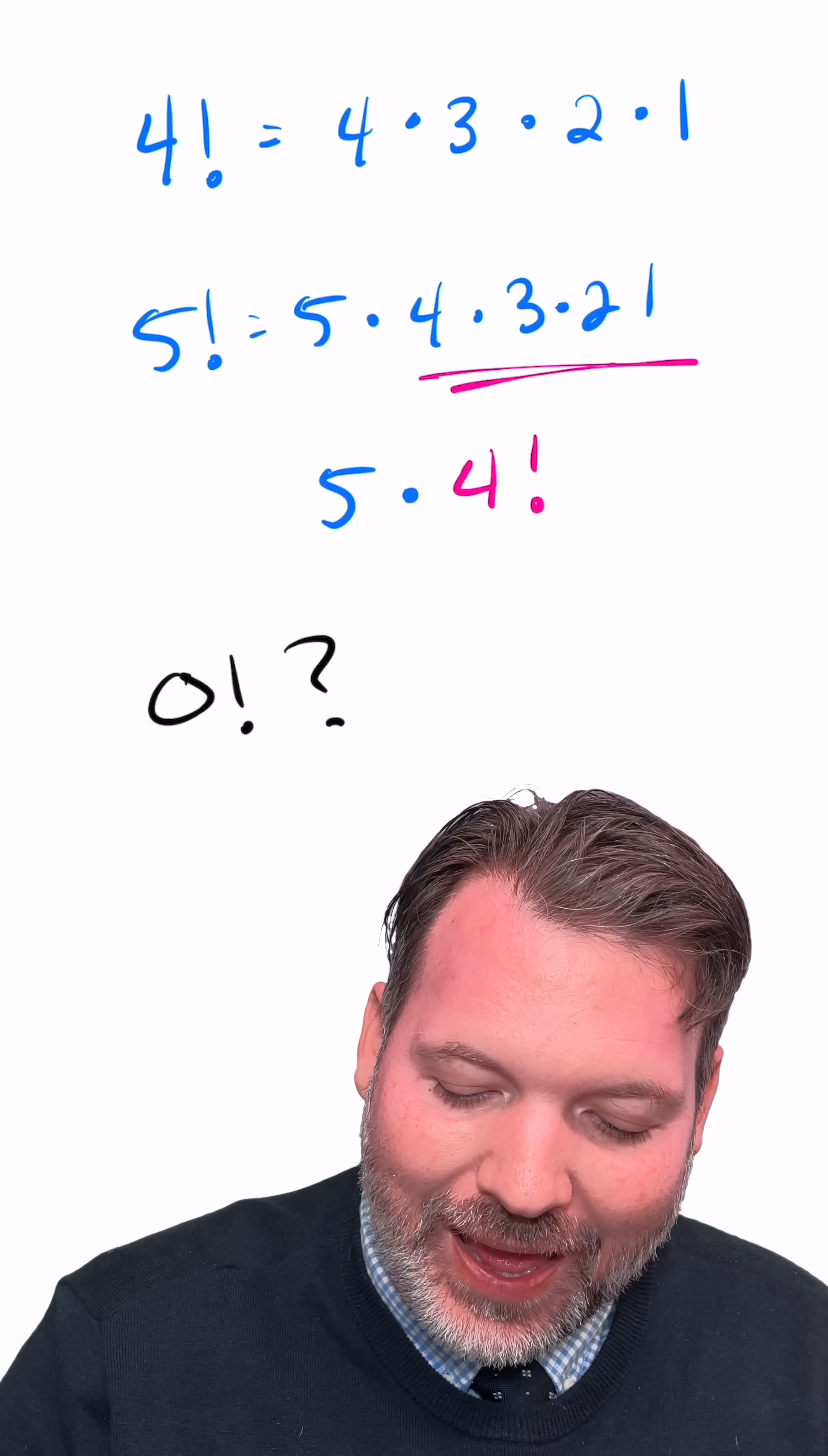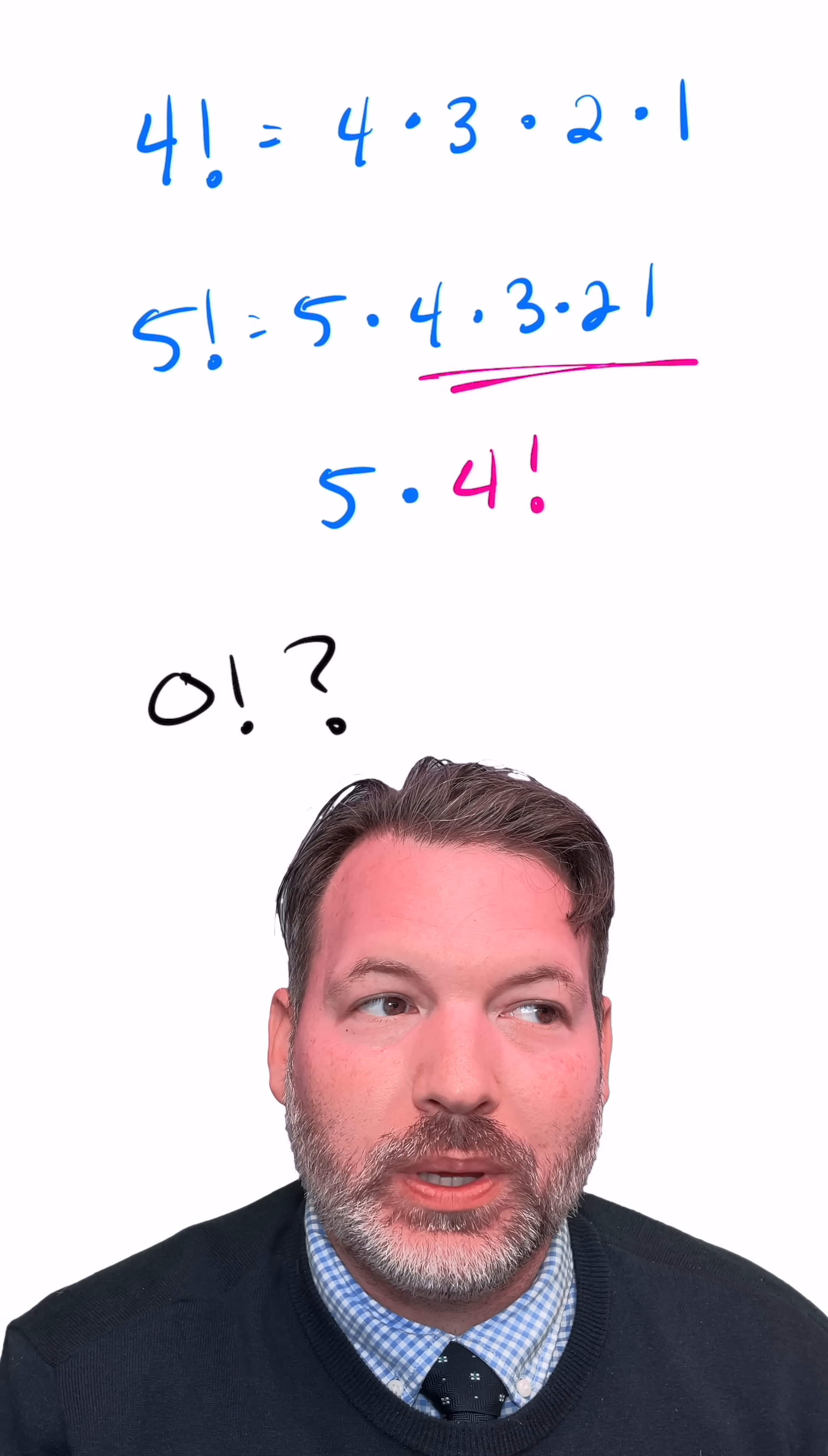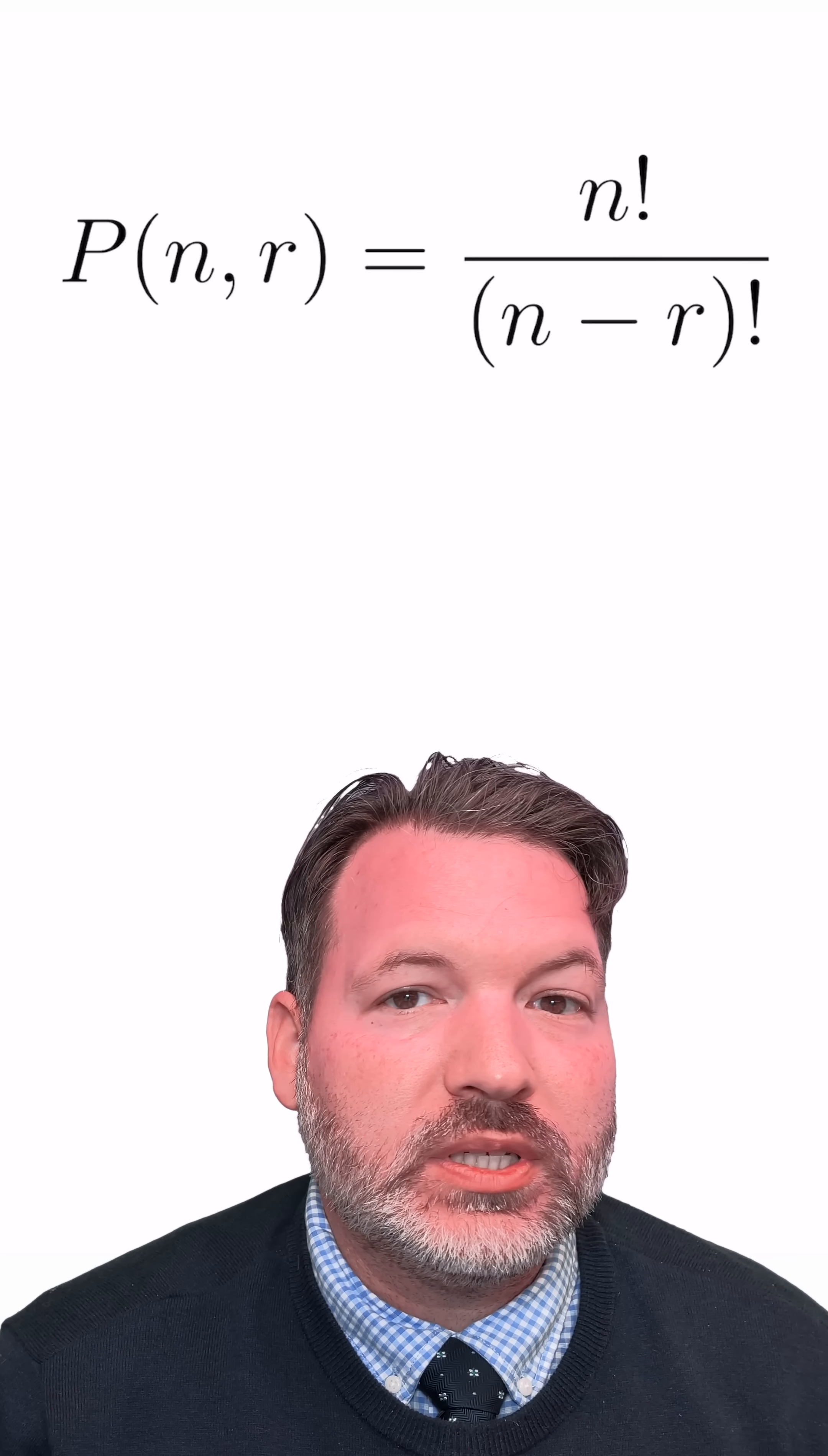It would appear as if we really can't evaluate what zero factorial is using this definition, because zero is not a natural number. We can't count down to one beginning at zero. So we might presume the best thing to do is to say there's just no such thing as zero factorial.